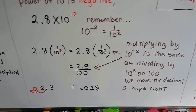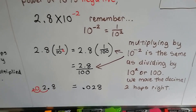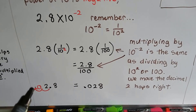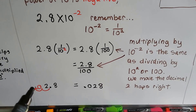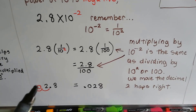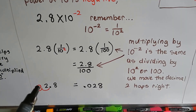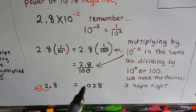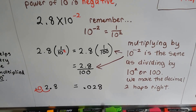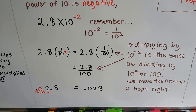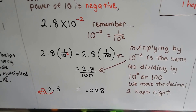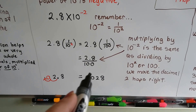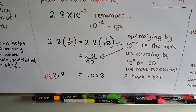We move the decimal two hops to the right — from here, 1, 2, to over here — and we put a zero in as the placeholder, and we get 0.028, or 28 thousandths. Just remember that zeros are placeholders.